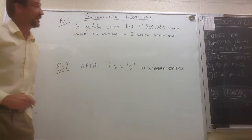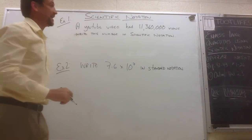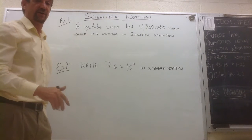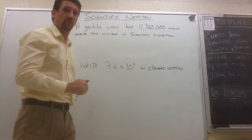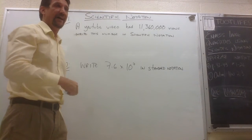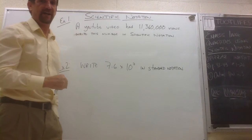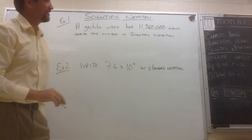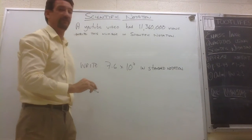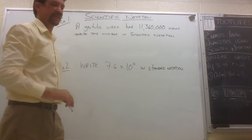And the way we do that is we write the number as a product of two factors. The first factor had to be a number that is greater than or equal to 1 and less than 10. And the second number is a power of 10. So look at the number we have on the board. Say a YouTube video had 11,360,000 views. Write that number in scientific notation.